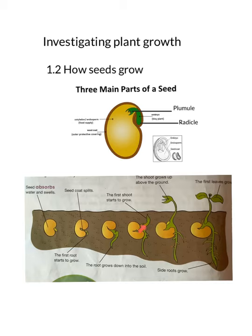Once the radicle has spread in the soil, the plumule starts growing out of the soil in search of sunlight — this is also called the shoot. The seed grows above the ground and starts producing leaves. Once the leaves start growing, food will be prepared by those leaves, and the cotyledon will shrink and wither off or fall off from the plant.